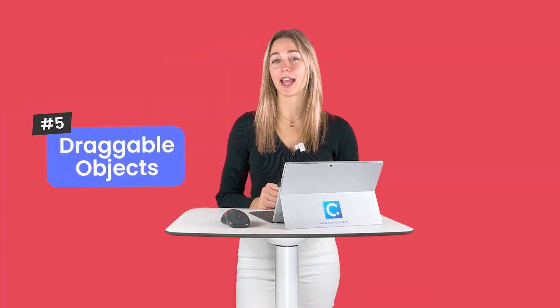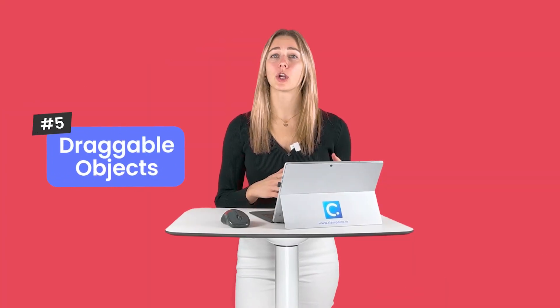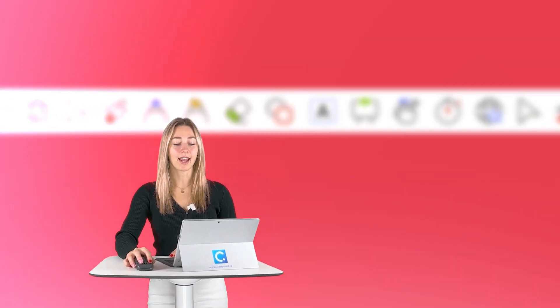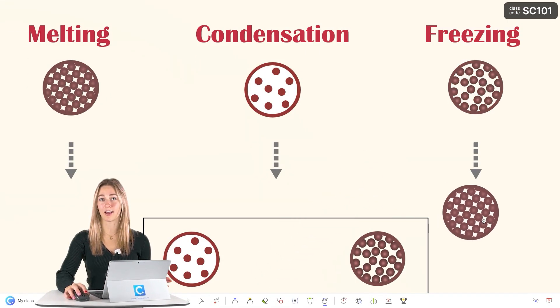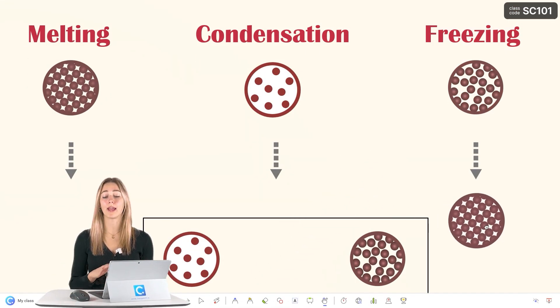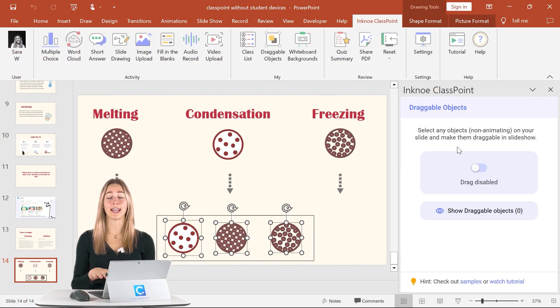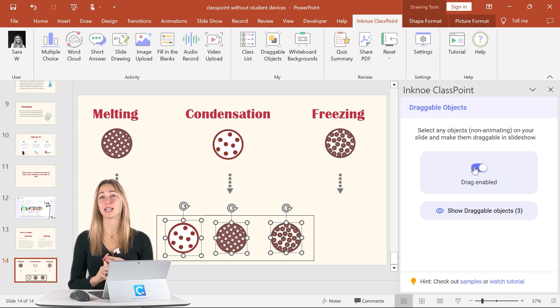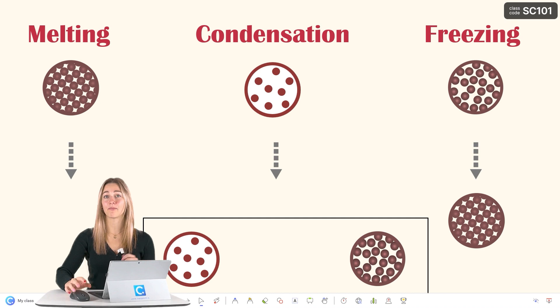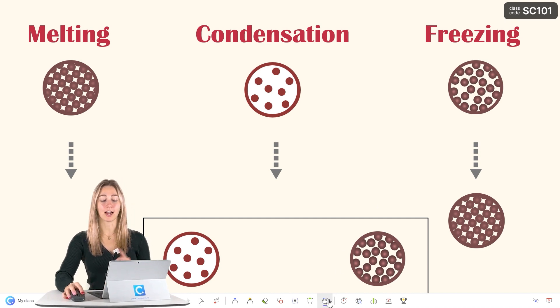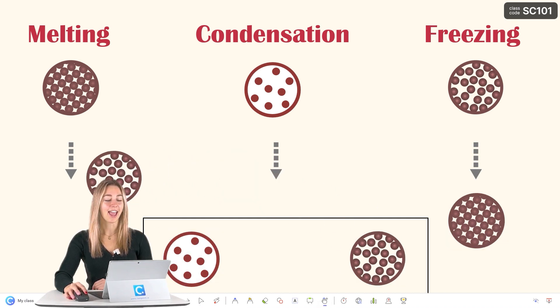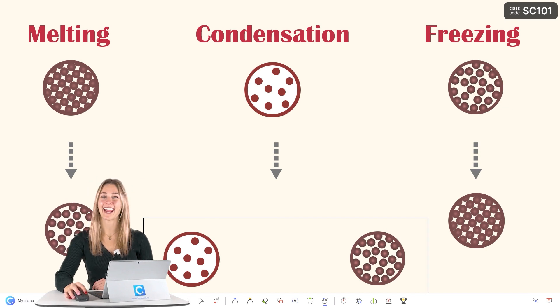Another presentation tool that you can try is draggable objects. Draggable objects are parts of your slide that are movable during your PowerPoint presentations. With just the click of a button, I can go ahead and move around my content on my slides. This provides way more freedom than what PowerPoint animations have to offer. All you have to do is enable any non-animating text, images, or shapes to be draggable during your presentation. Then, during your presentation, click on the draggable objects icon on the toolbar and begin moving around your content as needed.